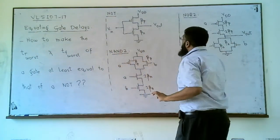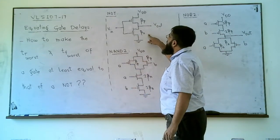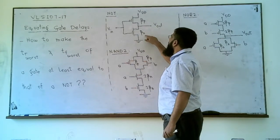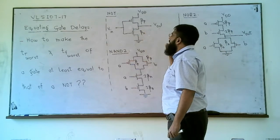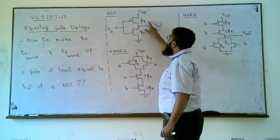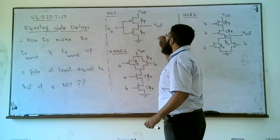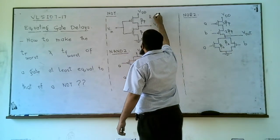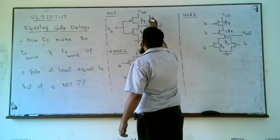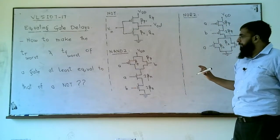Let us look at the betas or the aspect ratios for a NOT gate. Beta_p and beta_n are the transconductance values for the pMOS and NMOS transistors in a given node. They offer resistances r_p and r_n respectively, and r is inversely proportional to beta.